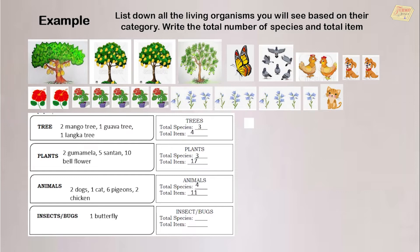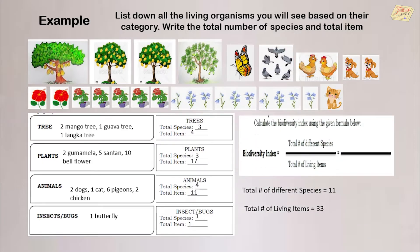For insects or bugs, there is only one butterfly in the picture. Therefore, the total species is one and the total item is one. The total number of different species is 11 and the total number of living items is 33. Therefore, the biodiversity index is equal to 0.33.